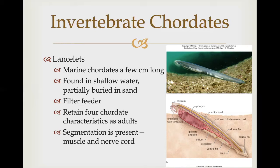Lancelets retain the four chordate characteristics as adults. In addition, segmentation is present, as witnessed by segmentally arranged muscles and periodic branches of the dorsal tubular nerve cord. In the image of the lancelet, we can see the notochord as the purple band, the dorsal tubular nerve cord in yellow above it, the pharyngeal slits in the pharynx region, and the post-anal tail — the adult retains all chordate characteristics.